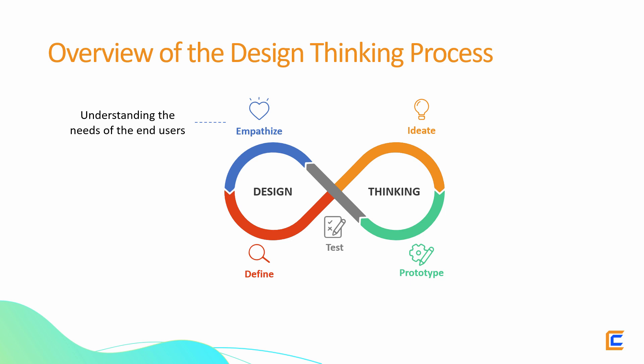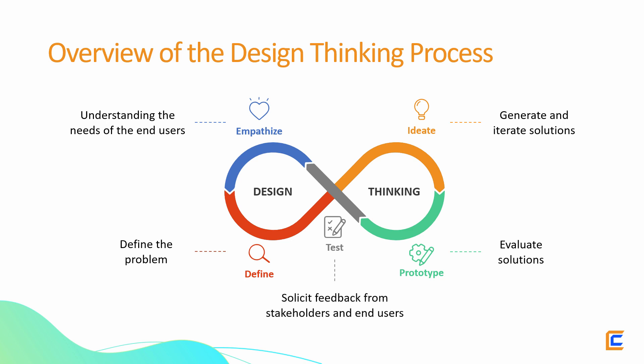Only after the needs are fully understood can you define the problem. After the problem is defined, potential solutions can be generated. These solutions are then evaluated against criteria such as feasibility and impact before a final solution is selected and implemented. Throughout the process, it is important to solicit feedback from stakeholders and end users, and you should be open to making changes based on that feedback.